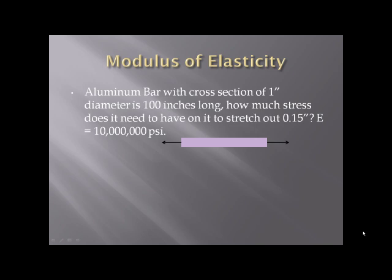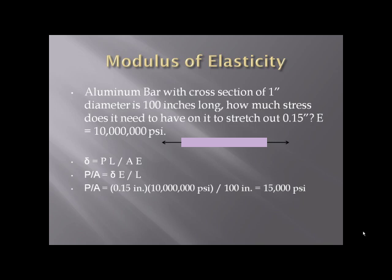Let's do another problem. The modulus of elasticity for an aluminum bar is going to be about 10 million PSI. Our aluminum bar is a one-inch diameter, and it's 100 inches long. How much stress does it have to have on it to stretch out 0.15 inches? In this case, you'll rearrange the formula to solve for stress. So I solve for P over A, the deformation gets multiplied by E and divided by L. I plug in the numbers for deformation, E, and length, and I come out with a value of 15,000 PSI.